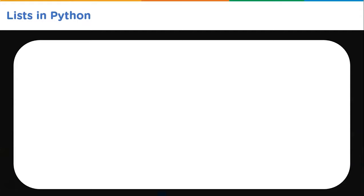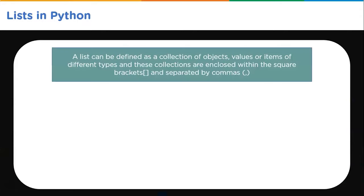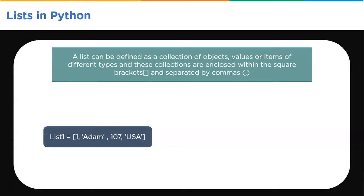Imagine you have different values — numbers, strings. If you want to group them together, you can do this in Python with the help of lists. Or if you have worked with arrays in any other language like C++ or Java, this is the similar concept here, which is a list. A list can be defined as a collection of objects, values, or items of different types, and these collections are enclosed within square brackets and separated by commas.